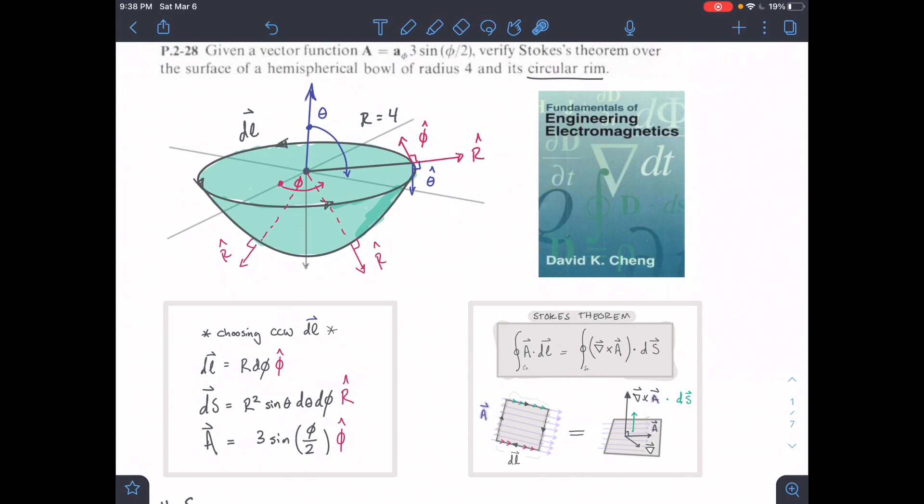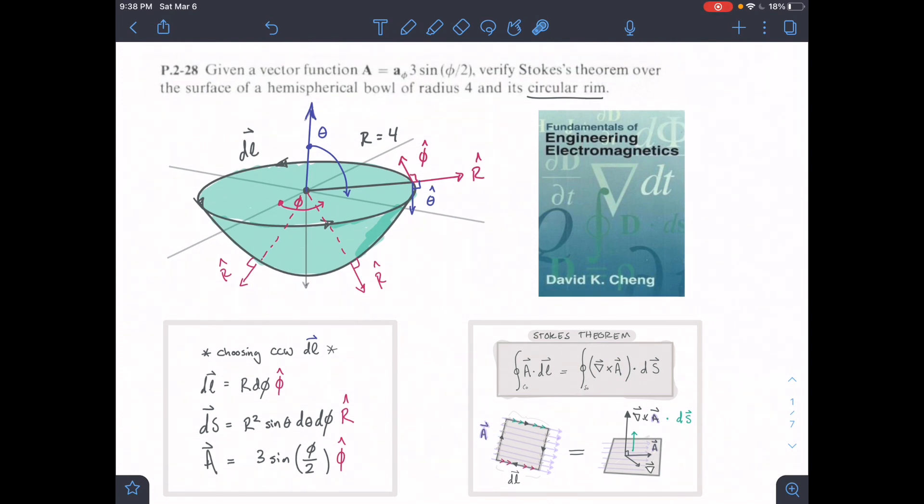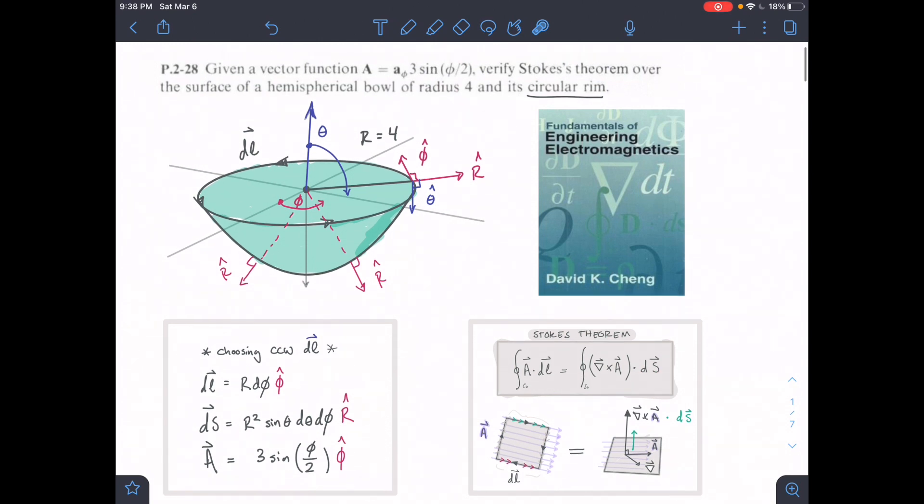Next we're going to do this curl operation - find the del operator cross A, or the gradient cross A. Then we dot it with our DS, the surface vector. The surface vector in this case for the right-hand side is going to be the outer part, the outer surface of this half sphere.